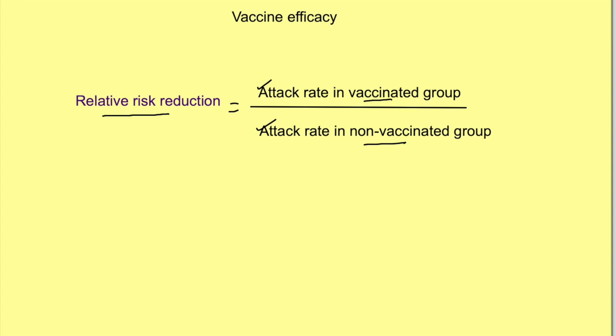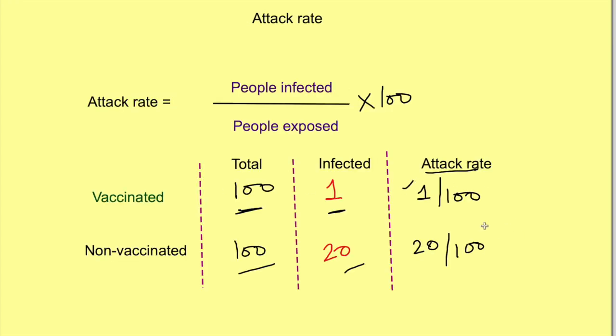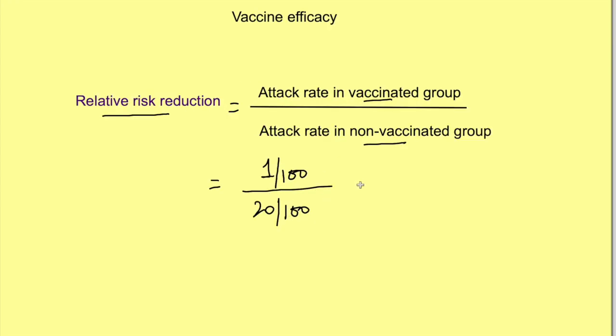In our case it will be 1 by 100 divided by 20 by 100, which comes to 1 by 20. That means a vaccinated person is 20 times less likely to get the disease when exposed.